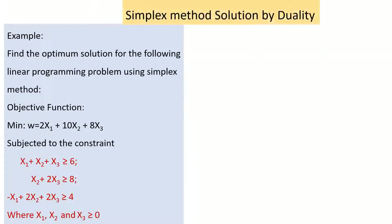Let's take one example to solve the primal using the dual. Find the optimal solution for the following linear programming problem using simplex method. The objective function is minimization: minimize w = x1 + 10x2 + 8x3, subjected to the constraints: x1 + x2 + x3 ≥ 6, x2 + 2x3 ≥ 8, -x1 + 2x2 + 2x3 ≥ 4, where x1, x2, x3 ≥ 0. This is the primal linear programming problem.